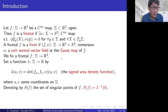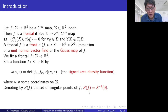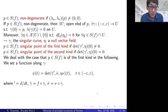We fix the frontal f. Then we set a function λ given by the determinant of f_u, f_v, and ν, where f_u and f_v are partial derivatives of f by u and v for some coordinates on σ. The function λ is called the signed area density function. We denote by S_f the set of singular points of f. Then, by the definition of singular points of f, S_f coincides with the zero set of λ.